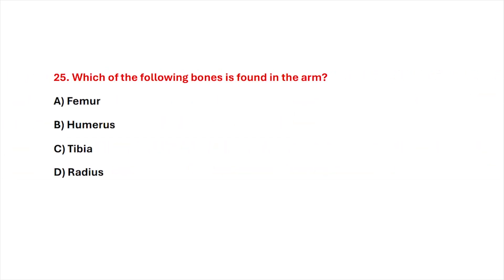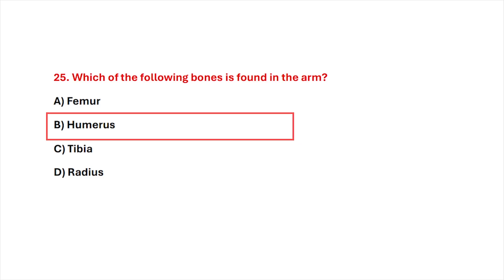Question 25. Which of the following bones is found in the arm? Correct answer is option B, humerus.